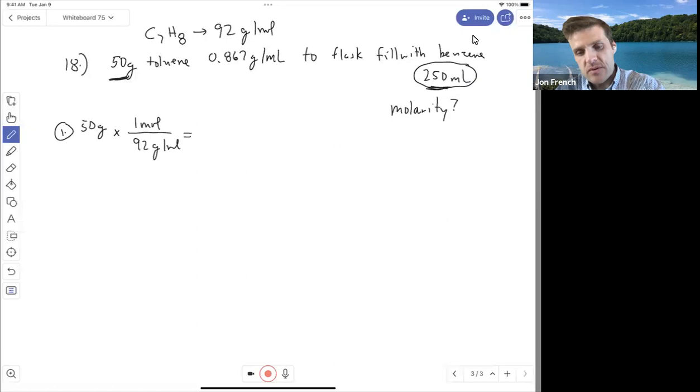So 50 grams is how much toluene I have, divided by the molar mass, 92. I've got 0.543 moles of toluene.